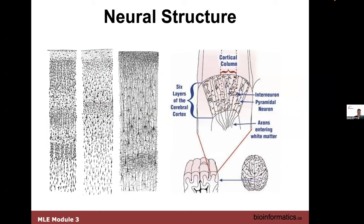One of the things noticed very early on is that the human cerebral cortex is made up of six layers of neurons, with different densities of neuronal connections. This suggests maybe there are six hidden layers in our brains, and that is sort of the sweet spot for a neural net.